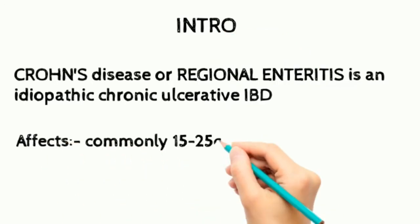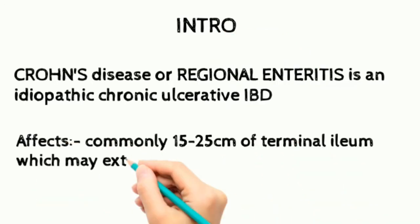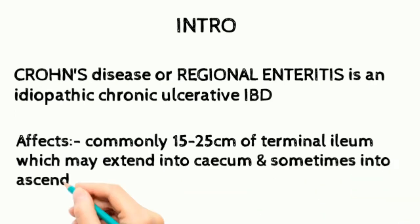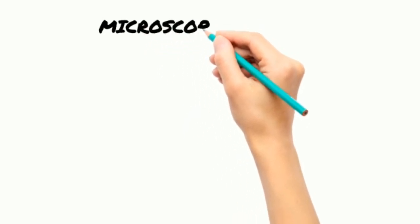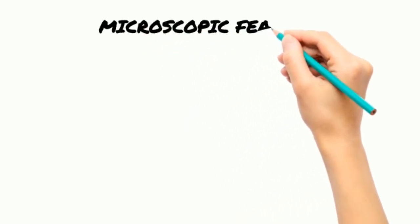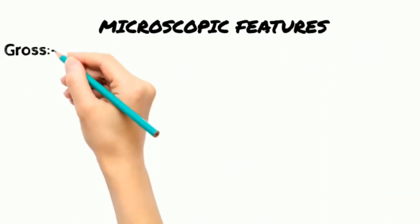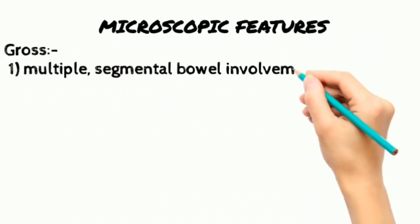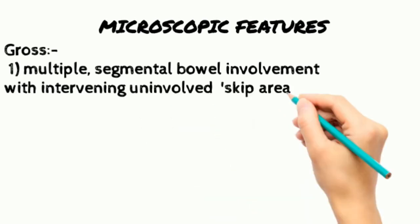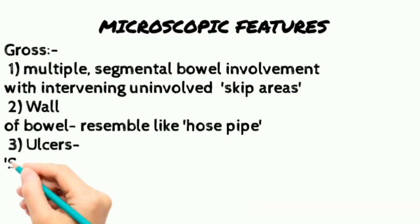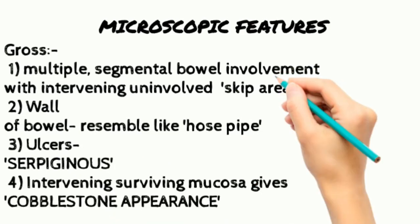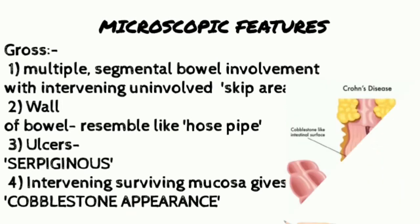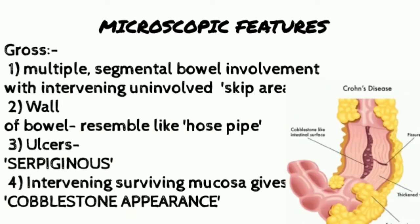It commonly affects the 15 to 25 centimeter segment of the terminal ileum, which may extend into the cecum and sometimes into the ascending colon. Grossly, there is multiple segmented bowel involvement with intervening uninvolved skip areas. The wall of the bowel resembles a hose pipe, and the ulcers are serpiginous, while the intervening surviving mucosa gives a cobblestone appearance.